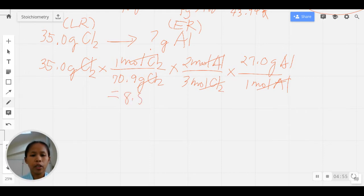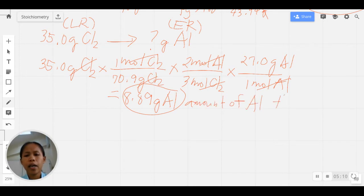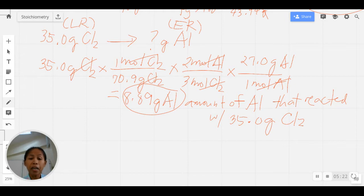Now what does 8.89 grams Al mean? This is just the amount of Al that reacted with 35.0 grams of your limiting reactant chlorine, and that's what we expected—it should be less than 10 grams, correct?